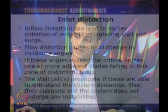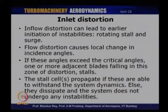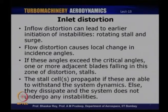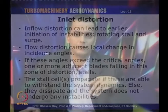Flow distortion causes local changes in incidence angles. When these angles exceed critical angles, one or more adjacent blades in the distorted region stall. The stall cells will propagate, and if they overcome the system dynamics, they propagate and become stronger. If system dynamics prevail, the stall cells will diminish and dissipate without instability. This is true when the level of distortion is very mild — the system dynamics can withstand these distortion levels. When distortion levels are higher, it will overcome system dynamics and the compressor may encounter surge or stall.